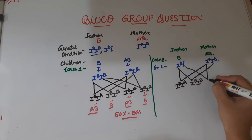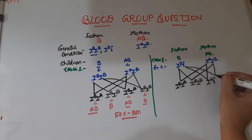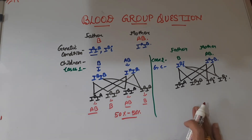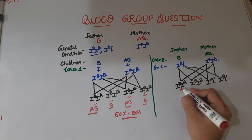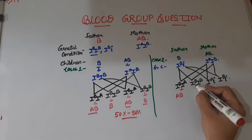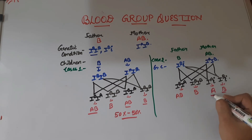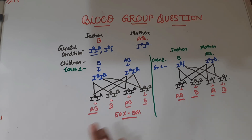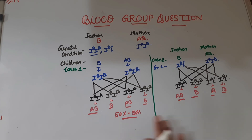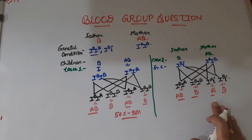If i from the father fuses with IA from the mother, the combination is IA and i. And if i fuses with IB, the combination is IB and i. So in Case 2 the blood groups expressed are: IB+IA gives AB, IB+IB gives B, IA+i gives A, and IB+i gives B. Unlike Case 1 where we only got AB and B in 50-50, in Case 2 we get blood groups AB, B, and A as well.